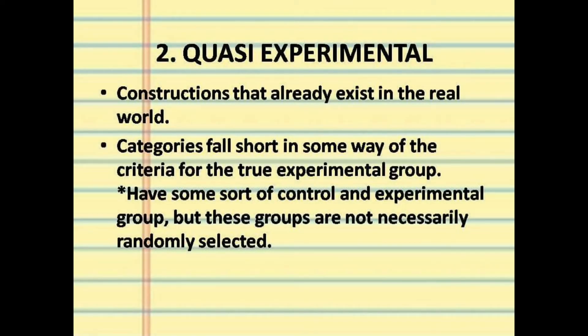Next, we have quasi-experimental. This is a construction that already exists in the real world. These categories fall short in some way of the criteria for true experimental. The group has some sort of control and experimental group, but these groups are not necessarily randomly selected.